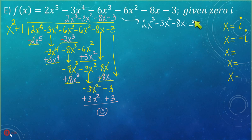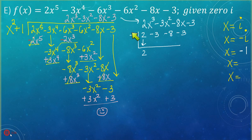Always start testing with positive 1. I already know that positive 1 doesn't work, but negative 1 does work. So I'm going to use synthetic division with negative 1, which gives me three solutions. I list my coefficients: 2, negative 3, negative 8, and negative 3. Drop down the first number, then multiply: negative 1 times 2, add, multiply, add, multiply — this process brings us down to our quadratic, which is what we wanted so we can factor it.